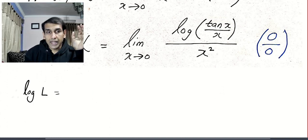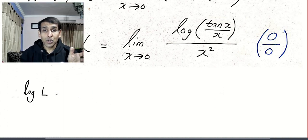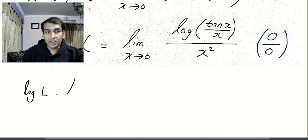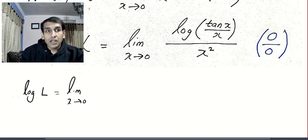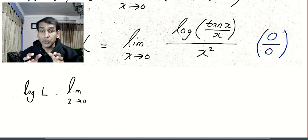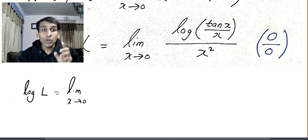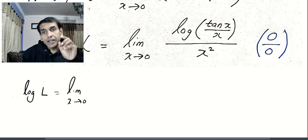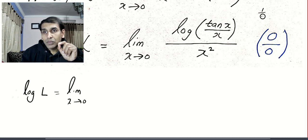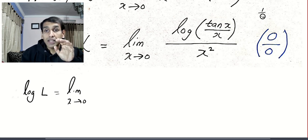We keep the left side as such because we cannot apply L'Hôpital's rule on both sides — we apply it only on the limit side. Many students get stuck at this part. This is where we need the chain rule. If you don't know the chain rule, pause the video — I have a separate video for chain rule and implicit functions. The derivative of log(something) is 1 divided by that same thing.